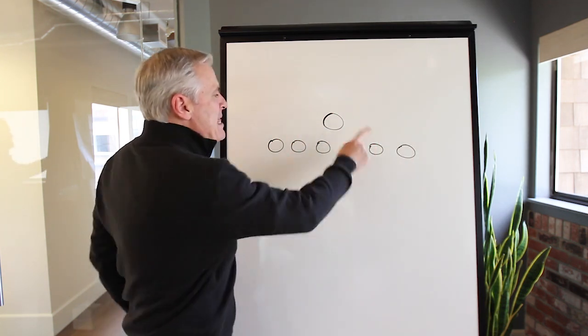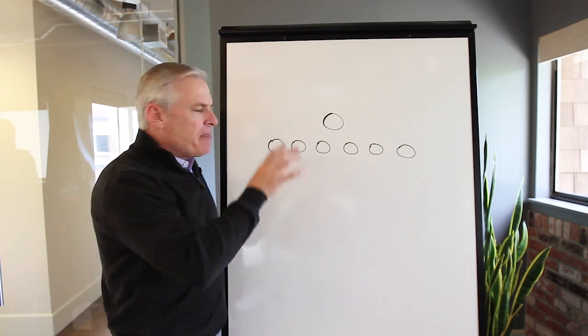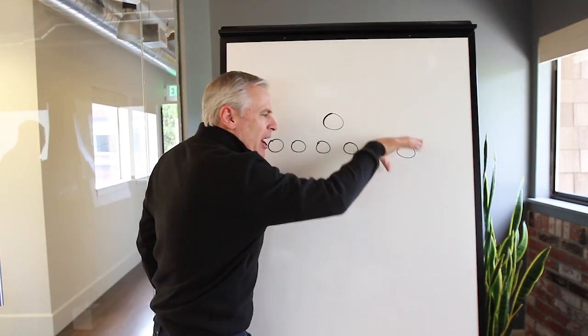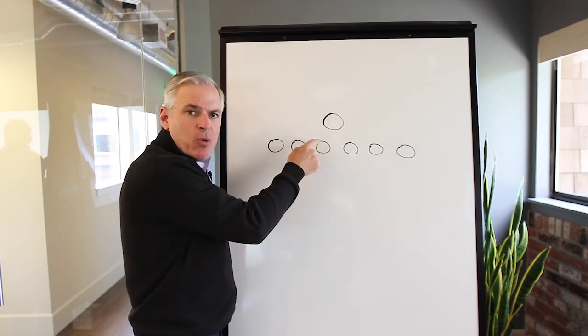Team number one means that these people have to make this team their number one priority and that these folks down here cannot prioritize their subordinates or their teams over this one.